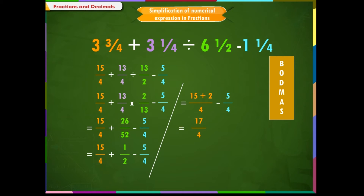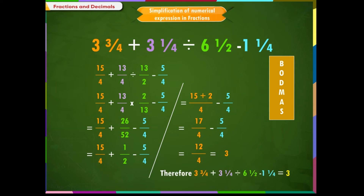Step 4: Subtract 17/4 minus 5/4. The denominators being the same, it becomes 12/4. Step 5: Reduce 12/4 to the lowest fraction. 4 is the common factor, so 12/4 reduces to 3. Therefore, 3 and 3/4 plus 3 and 1/4 divided by 6 and 1/2 minus 1 and 1/4 is equal to 3.